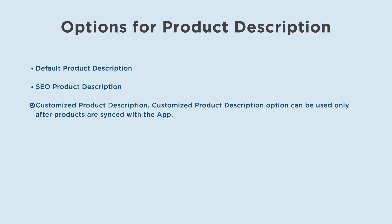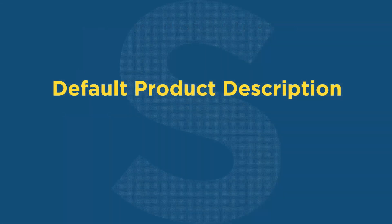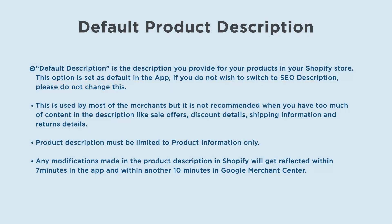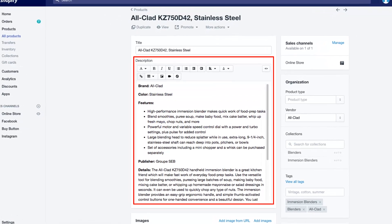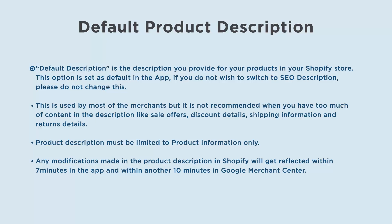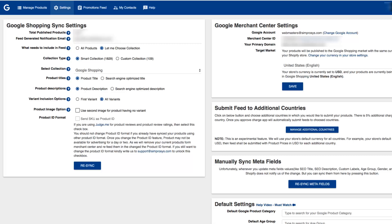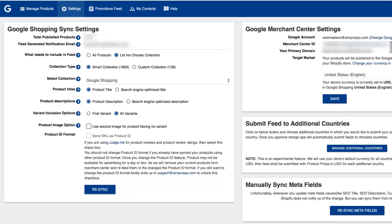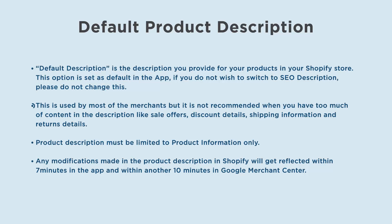Let us see what the default product description option is and how to use it. Default description is the description you provide for your products in your Shopify store. This option is set as default in the app. If you do not wish to switch to SEO description, please do not change this. It is used by most merchants, but it is not recommended when you have too much content in the description.